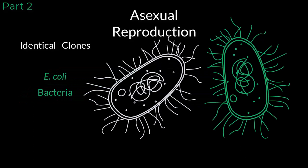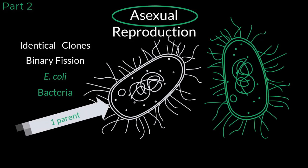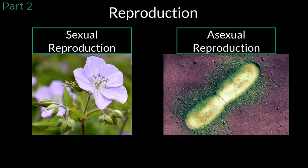This process for bacterial reproduction is called binary fission. And again, this is classified as asexual reproduction because the process takes place with genetic material from only one parent. There are different types of asexual reproduction, but the main idea is that only one parent is passing down genetic material to the offspring. So we now know there are two categories of reproduction, sexual and asexual. Let's try to put our new knowledge to the test.